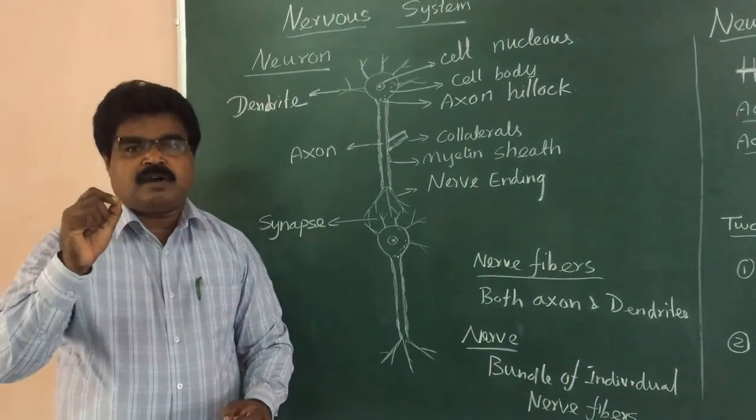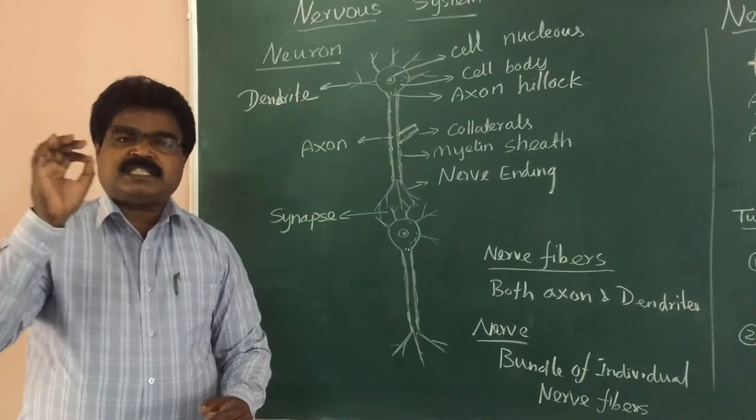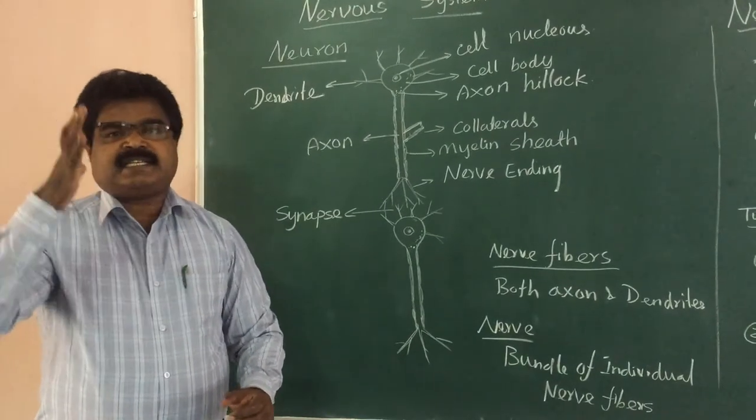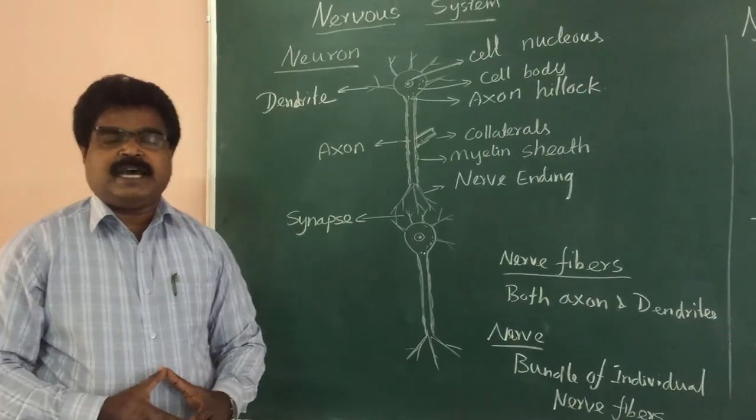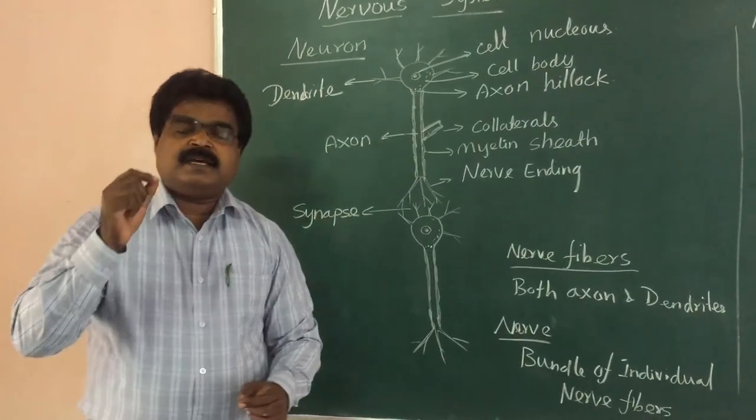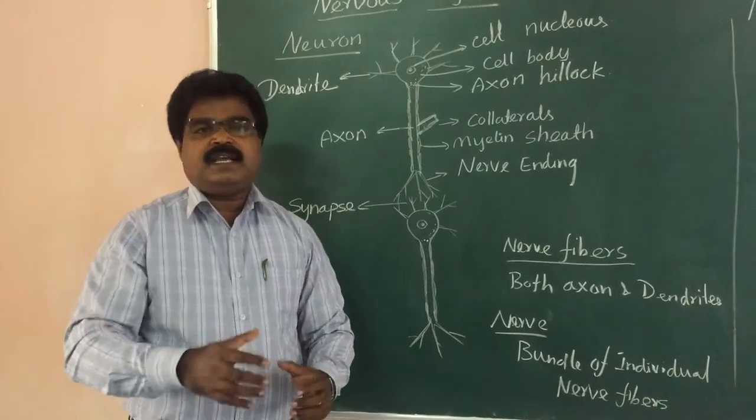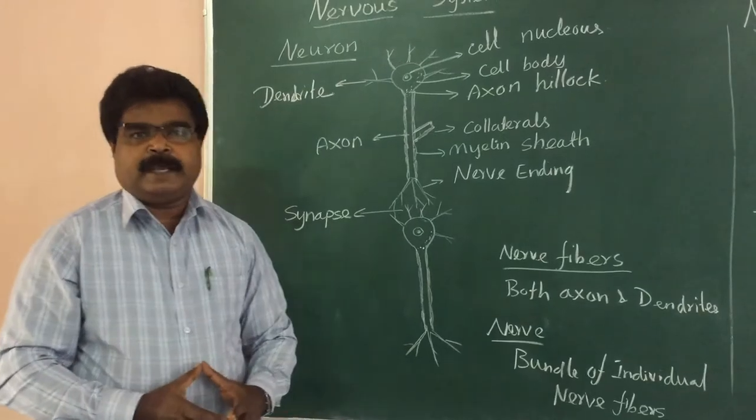Once the action potential reaches the nerve ending and the nearby neuron is excited, immediately a chemical called acetylcholinesterase breaks down the acetylcholine.